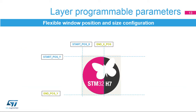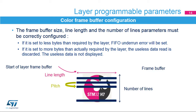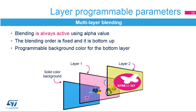Every layer can be positioned and resized. The programmable layer position and size define the first and last visible pixel of a line and the first and last visible line in the window, allowing display of either the full image frame or only a part of it. Every layer has a configurable number of lines and line length for the color frame buffer and the pitch. The pitch is the distance between the start of one line and the beginning of the next line in bytes. These parameters are expressed in bytes, not in pixels, so their values depend on the number of bits per pixel. The line length and number of lines parameters are used to stop the prefetching of data from the layer FIFO at the end of the frame buffer.